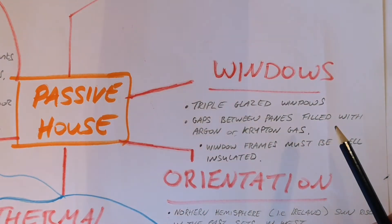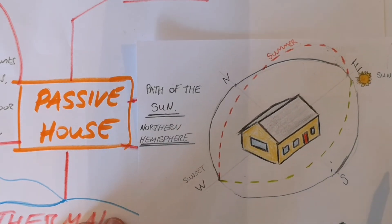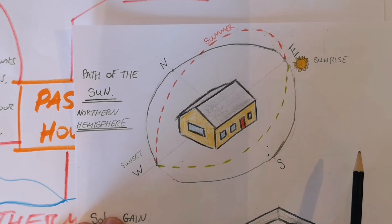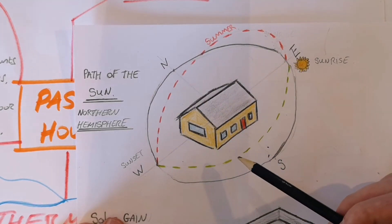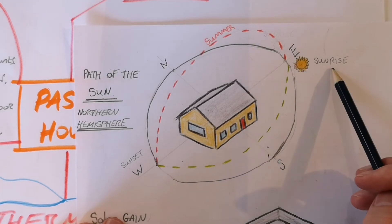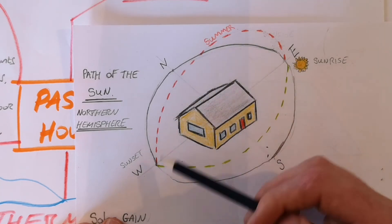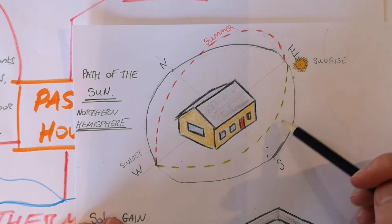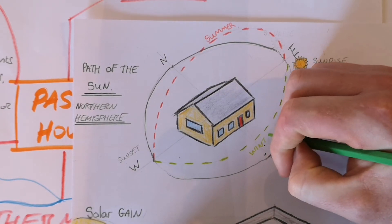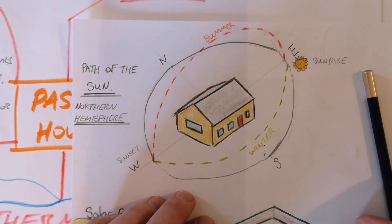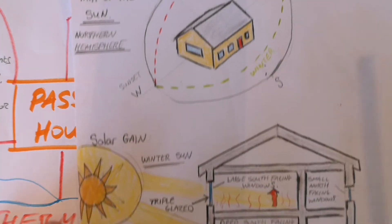There's no need for a sketch for triple glazed glass — that's self-explanatory. For the orientation, I looked up Google for the path of the Sun in the northern hemisphere, and it's actually a simple image to draw. In the northern hemisphere you have your sunrise in the east. The high summer Sun goes up high in the sky and travels from east to west, whereas the winter Sun is lower and travels along the southern facade of the house.